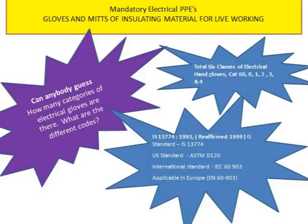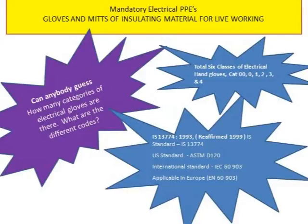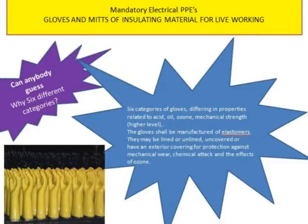There are total six classes of electrical hand gloves: category double zero, category zero, category one, category two, category three, and category four. Different standards exist, such as IS 13774 from 1993, the US standard ASTM D120, and the international standard IEC 60903, which is applicable in Europe as EN 60903.